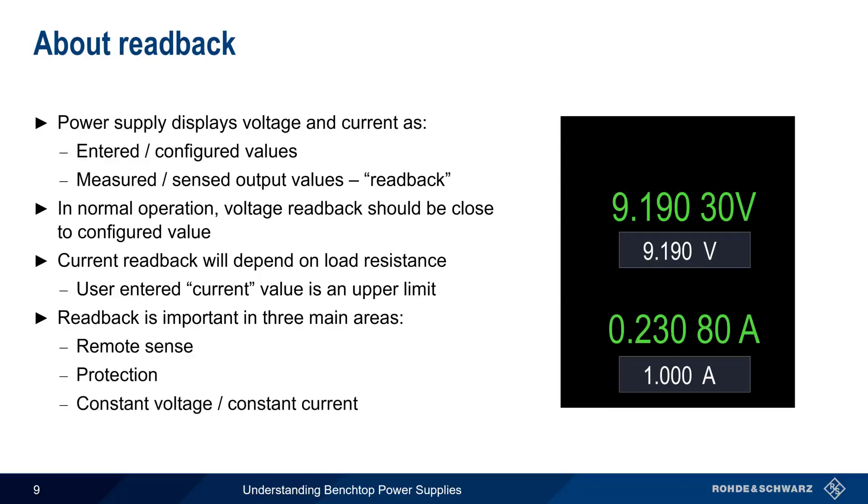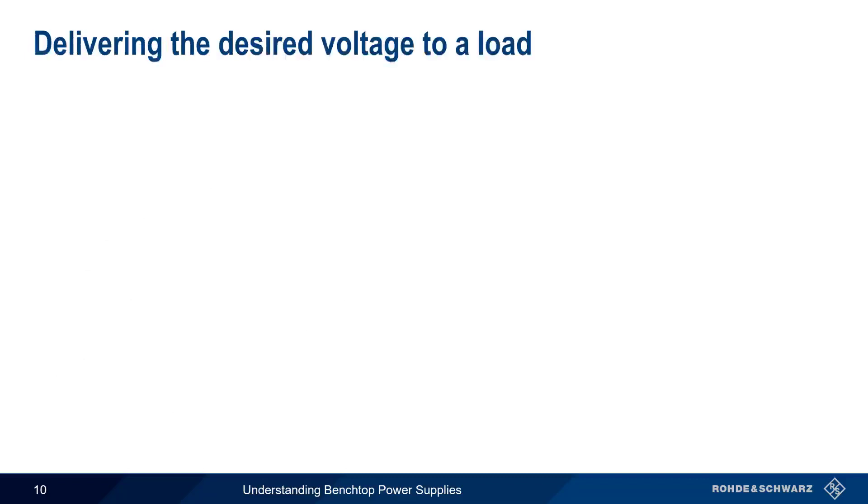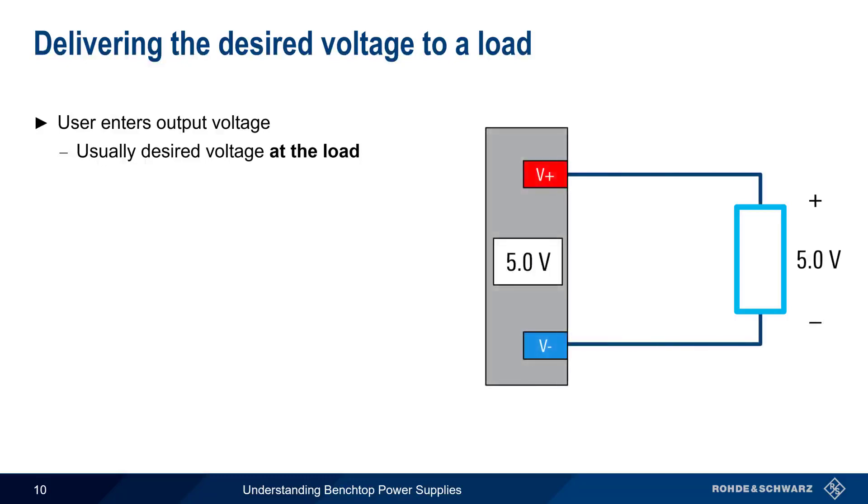Let's start by looking at remote sense. When a benchtop power supply user enters a voltage, they often are entering the voltage they want to be present at the load. For example, if we wanted 5 volts across our load, we would connect it to our power supply leads and configure the supply to output 5 volts.